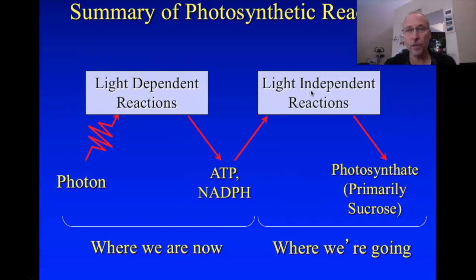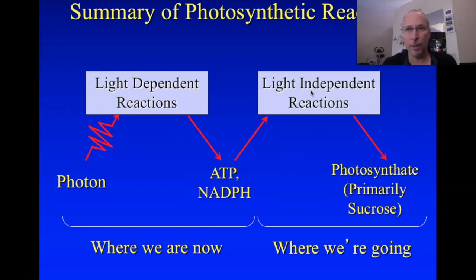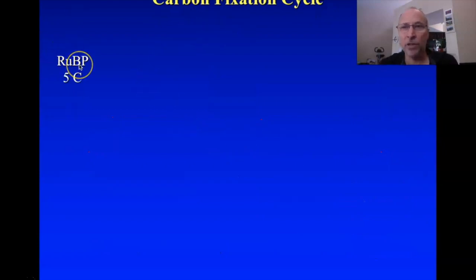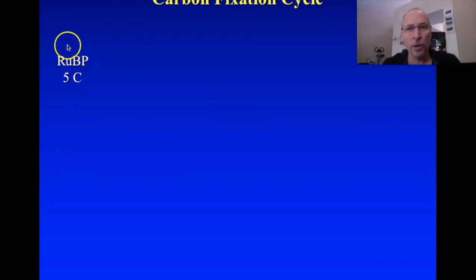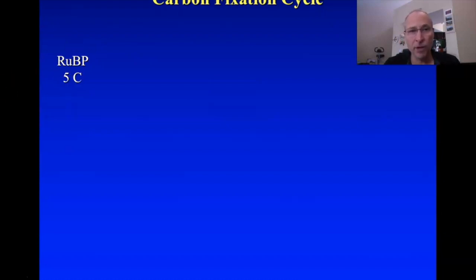For example, there's a cycle — just like the Krebs cycle — called the Calvin-Benson cycle, or the carbon fixation cycle. Once you go through the carbon fixation cycle, you produce a molecule of glyceraldehyde-3-phosphate (G3P), which you use to make the photosynthate. We start with a molecule called ribulose bisphosphate, abbreviated RuBP. It's a sugar — ribulose — with two phosphate groups, similar to ribose. It's a five-carbon sugar, and this is where carbon fixation actually occurs.